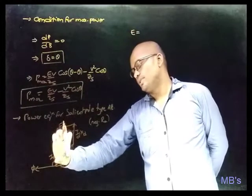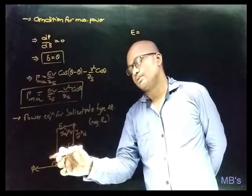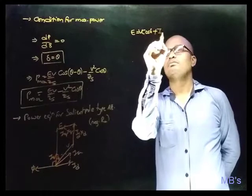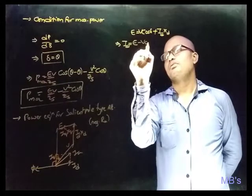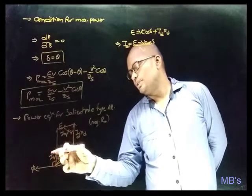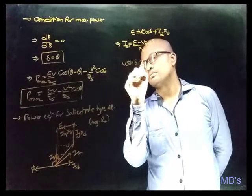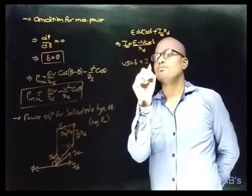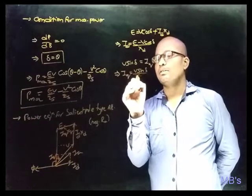From this, ID equals (E − V cos δ) divided by Xd. This is the first equation. The component of V along the q-axis is V sin δ, which equals IQ × Xq, giving IQ equals V sin δ divided by Xq.